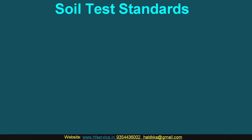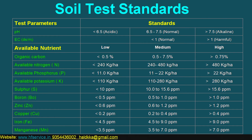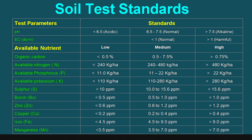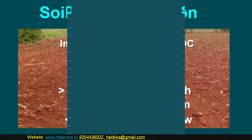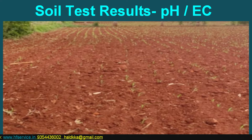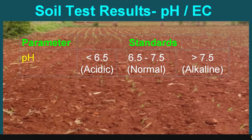Let us have a look at this table. Except for some minor variations from one lab to another, the parameters tested and standards are almost similar as presented in this table. In the previous episode, we have already discussed about organic carbon. The next parameter to be discussed here is pH. pH is perhaps the best indicator of soil health. Most crops prefer a normal soil pH of 6.5 to 7.5 for optimum growth, development and yield.